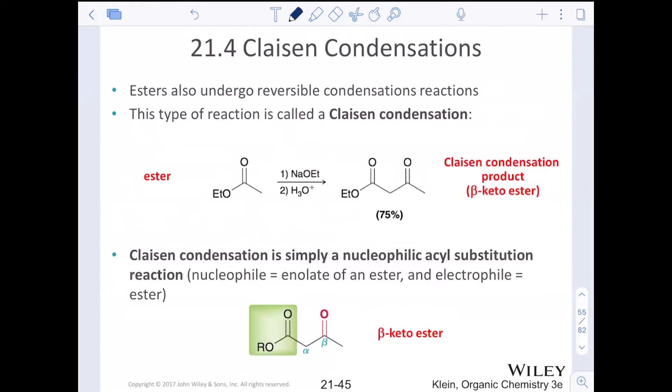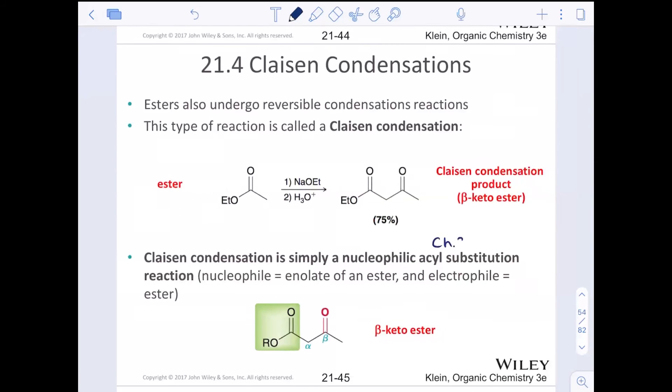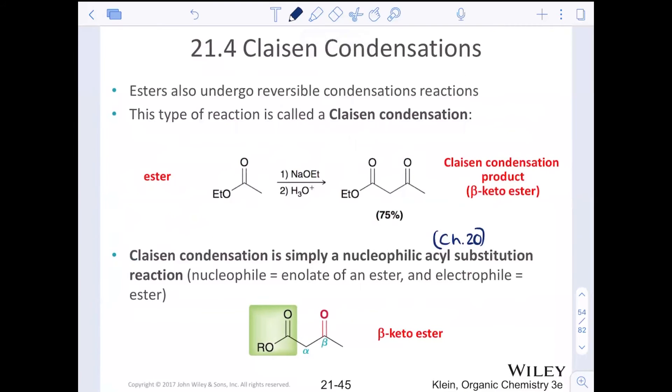Claisen condensation reactions are very similar to aldol condensation reactions. The only difference is that we are going to use esters. Esters also undergo reversible condensation addition reactions. We tend to try to use a Claisen condensation that is simple. It is going to look like a nucleophilic acyl substitution reaction. Chapter 20, just right here in the forefront of our mind, when we're looking at an enolate nucleophile attacking an electrophile.